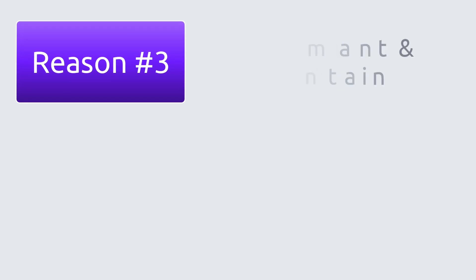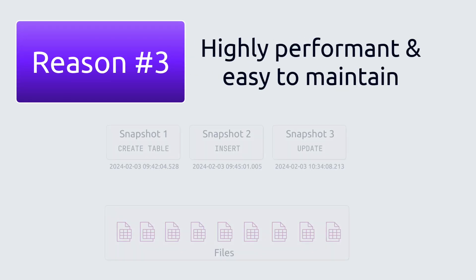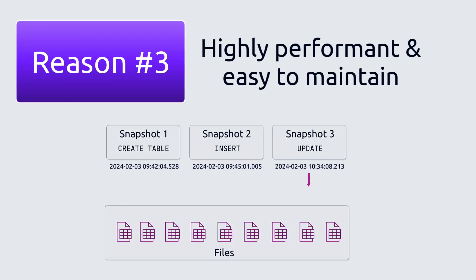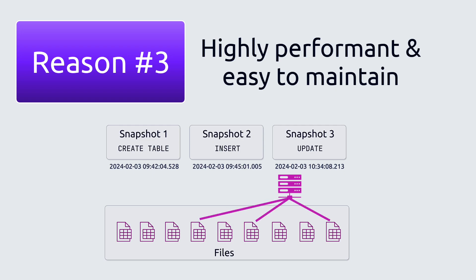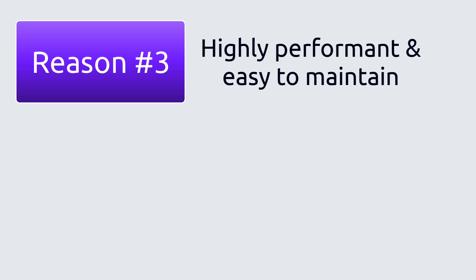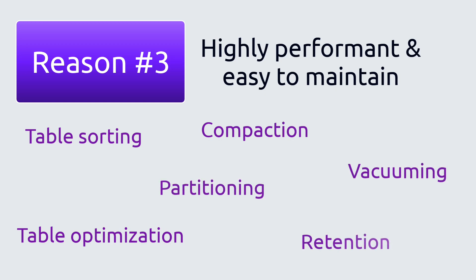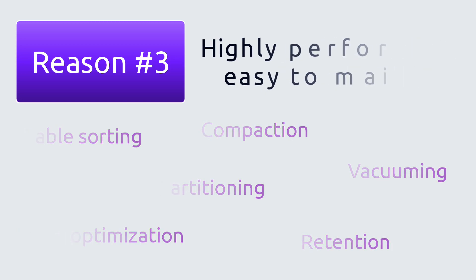Reason number three: Iceberg is highly performant and easy to maintain. Since Iceberg stores a table state in a snapshot, the engine simply needs to read the metadata in that snapshot, then start retrieving the data from storage, saving valuable time and reducing cloud object store retrieval costs. Additional features like table sorting, table optimization, compaction, vacuuming, partitioning, and retention also increase the performance and ease of maintenance.